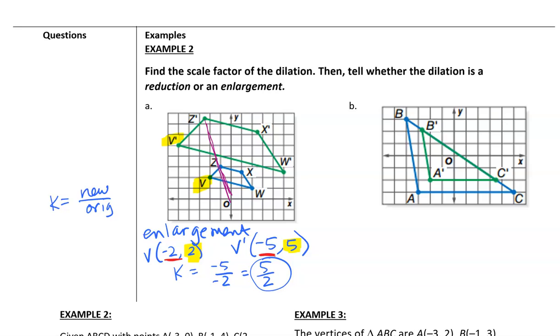I am kind of looking here. So A to A prime. So my blue image is shrinking to the green. So this is a reduction.